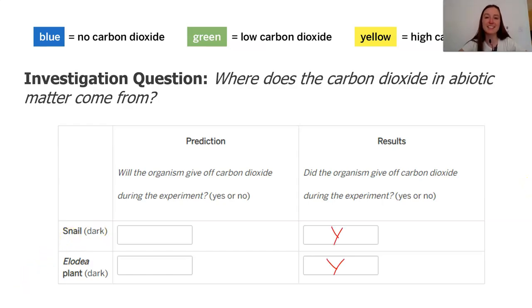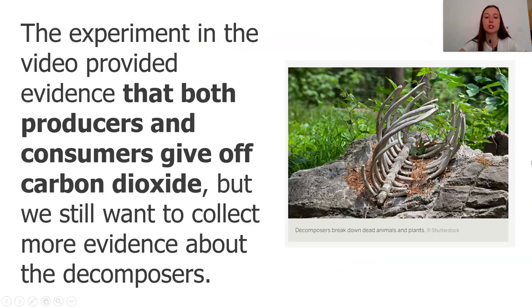From our observations, both the snail and the elodia did give off carbon dioxide during our investigation. The snail, if you recall, is a type of consumer. The producer is the elodia. This leads us to the conclusion that both consumers and producers give off carbon dioxide. But we still want to collect more evidence about other organisms in the ecosystem. We need to switch our view to think about whether or not decomposers give off carbon dioxide. We're going to read an article to think about this further.